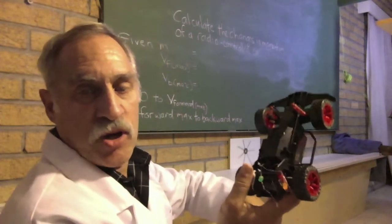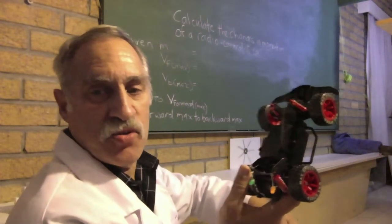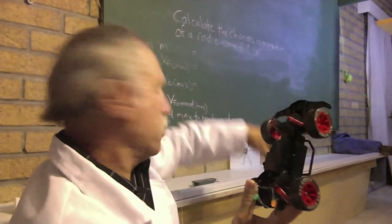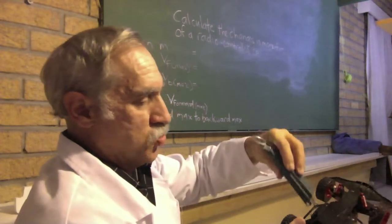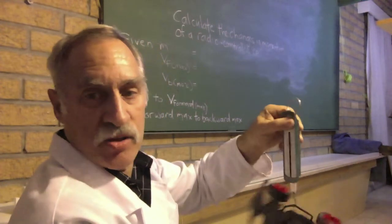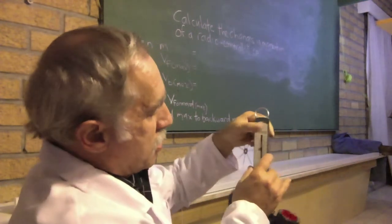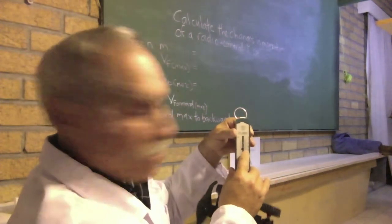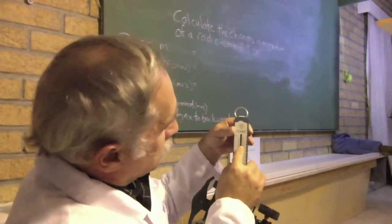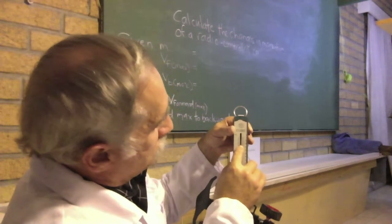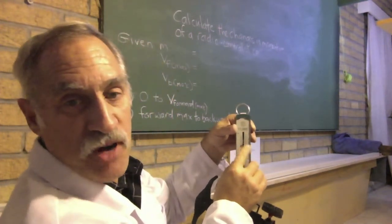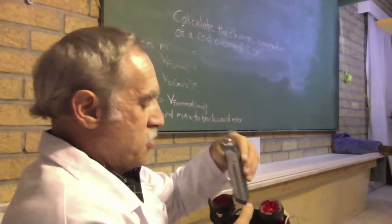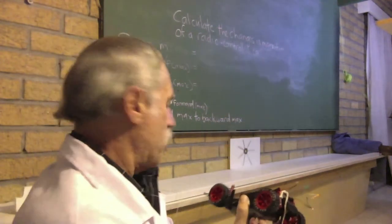And we're going to work out the changes in momentum to this little radio controlled car. Now we need to know the mass of the car. So let's weigh it on a spring balance and the mass is 0.25 kilograms or 250 grams. So now we know the mass of our radio controlled car.